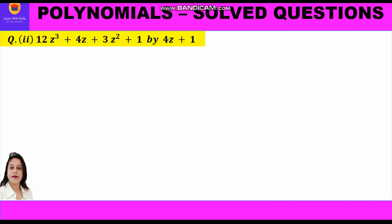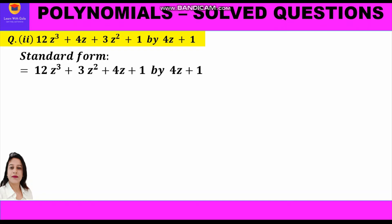It is given: divide 12z³ plus 4z plus 3z² plus 1 by 4z plus 1. First of all, we shall write the dividend in standard form, that is in decreasing order of the powers. So first we write 12z³, followed by plus 3z² plus 4z plus 1.